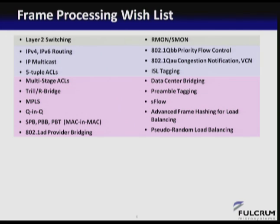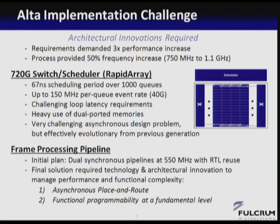We decided we needed to come up with a different approach — largely attacking this from the standpoint of getting away from the specific hard-coded details of all of these protocols and trying to implement something more basic: just a singular asynchronous pipeline in the simplest way possible. The datapath and scheduler actually went pretty smoothly in terms of area and schedule. The frame processing pipeline required innovations. There were two key innovations in Alta that allowed us to be successful: first was asynchronous place and route — we needed to increase the productivity of our asynchronous design flow by introducing logic synthesis and place and route capability. Second was to get away from hard-coded details and implement something more generic and programmable at the fundamental compute level.